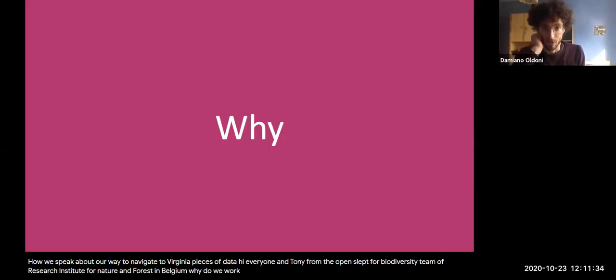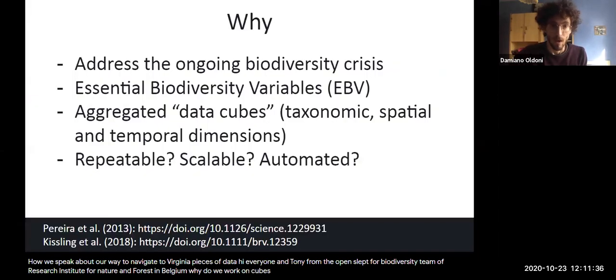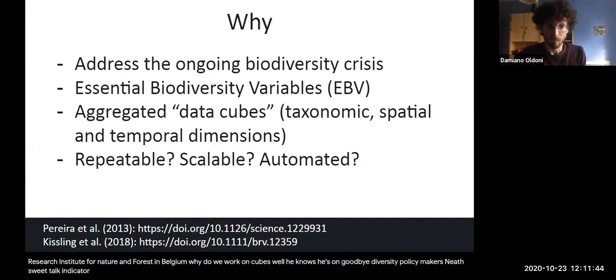Why do we work on occurrence cubes? Well, everybody knows, we're facing a biodiversity crisis, policymakers need a suite of indicators. GEO BON proposed essential biodiversity variables to account for this, and we need the intermediate data and a way to aggregate data, so-called data cubes.